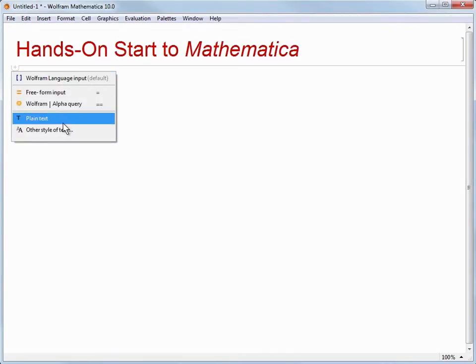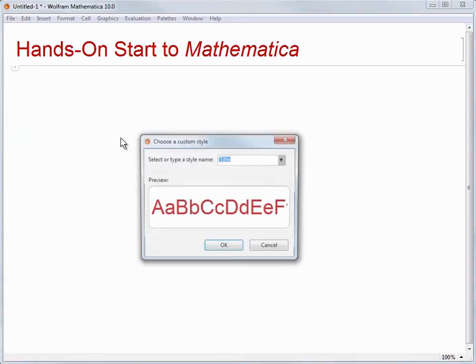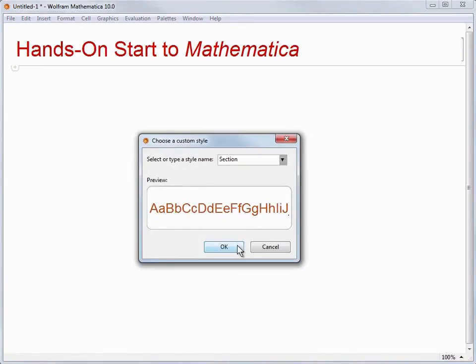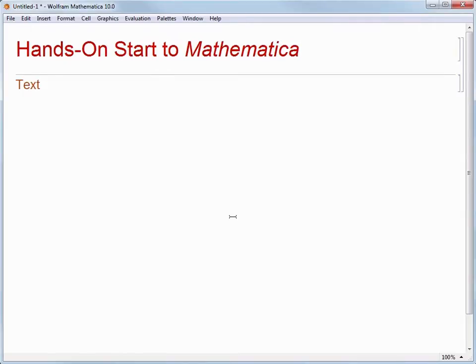This time, we'll choose Other Style of Text, but then we will select a section cell as our final choice and type in Text and Documents. What we're doing is creating a document with structure so that we can fill it in as we proceed with the video in this series, and so that you can get some experience with using Mathematica for more than just doing calculations.